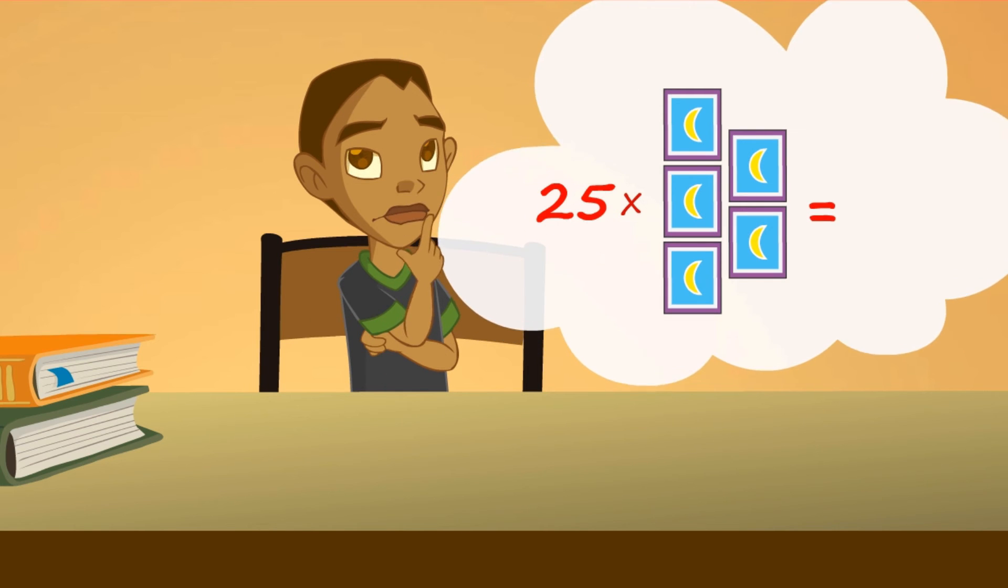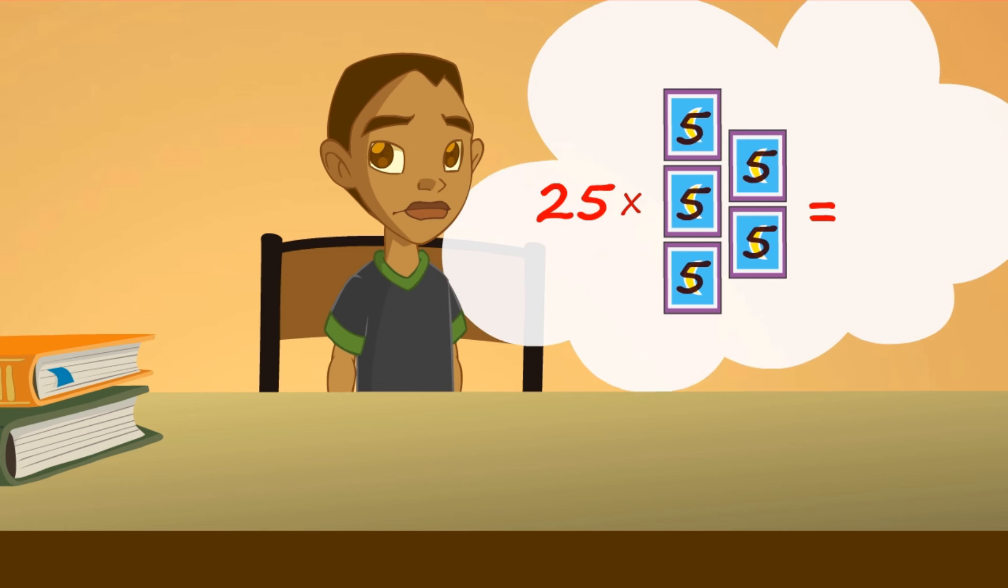So, if I got 25 packages of stickers, and each one contains five, I must multiply 25 by 5, that equals 125, doesn't it?